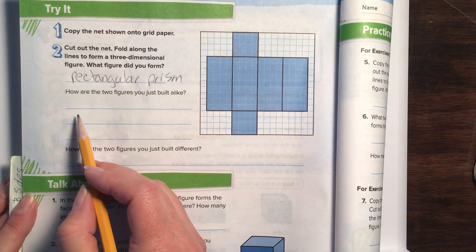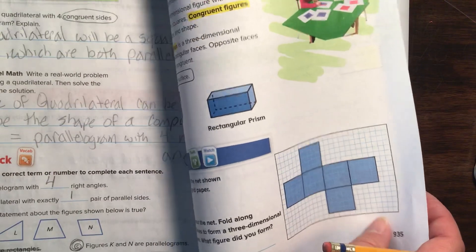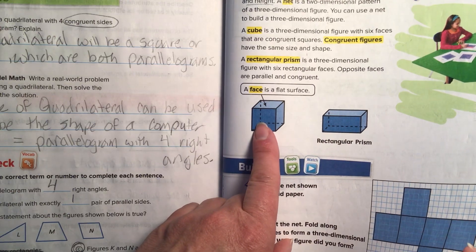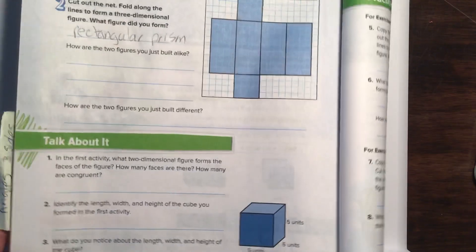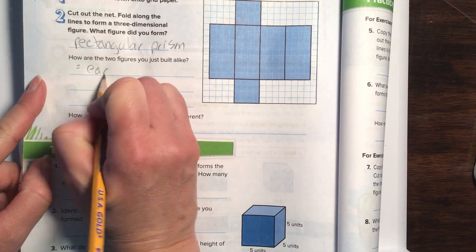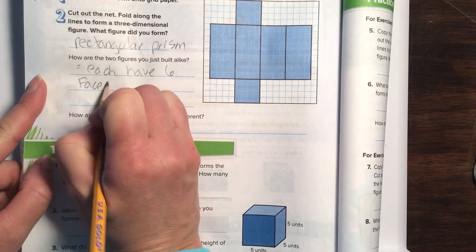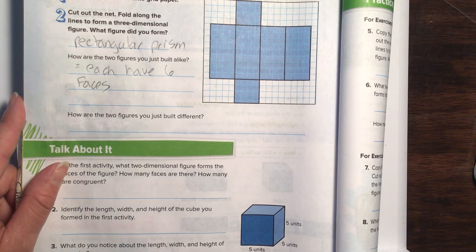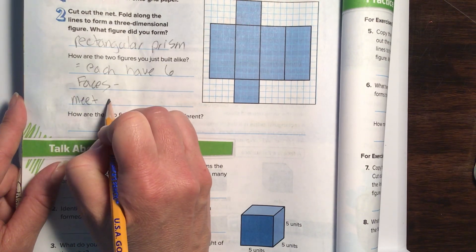How are the two figures you just built alike? So they want you to pretend you built this one and you cut that one out and build it. When they are finished, they're going to make these two shapes. So how are these two shapes alike? Well, I would have to say they each have six faces. Remember, a face is a side. And they all meet at right angles.